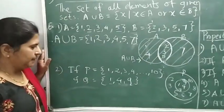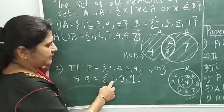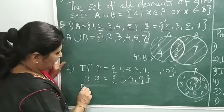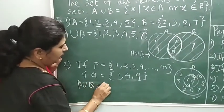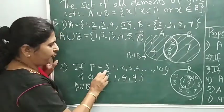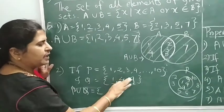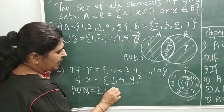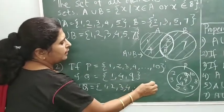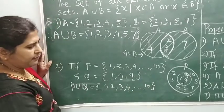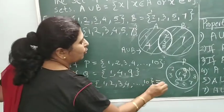In the second example from the previous video, say P is 1, 2, up to 10 numbers and Q is 1, 4, 9. What will be P union Q in this case? We can see that the 10 elements of P include the same 1, 4, 9 elements from Q. So we need not write any extra. So this is 1, 2, 3, 4, dot dot dot till 10.